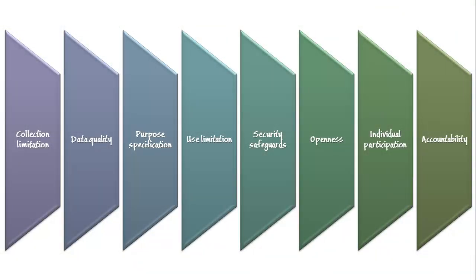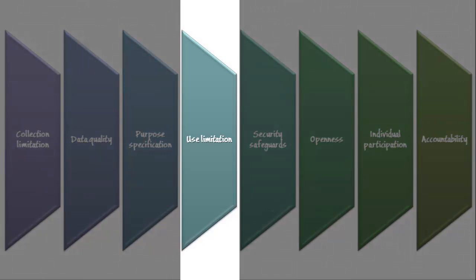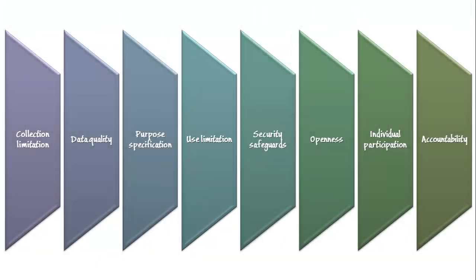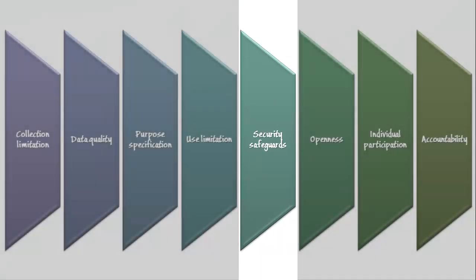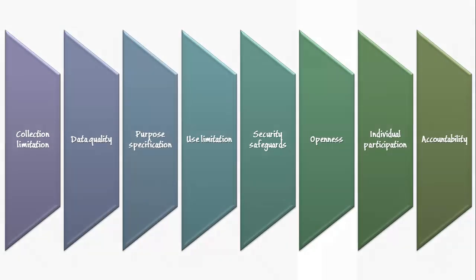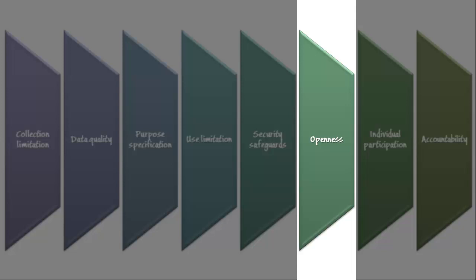Fourth is the principle of limited use — information should be used only for a specified purpose unless the individual explicitly consents to it being used otherwise or the law requires it. Fifth is the principle of safeguarding security — procedures must be established to protect sensitive information from being lost, damaged, or misused. Sixth is the principle of openness — information about the acquisition, storage, and use of personal information should be easily obtainable.